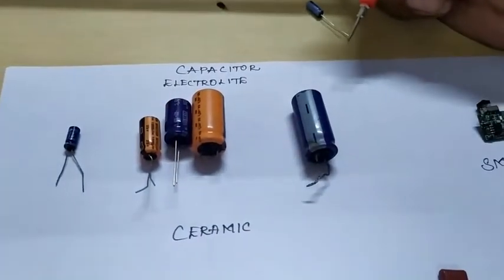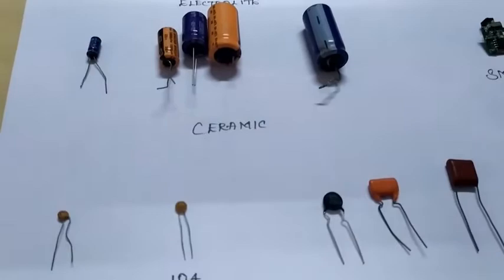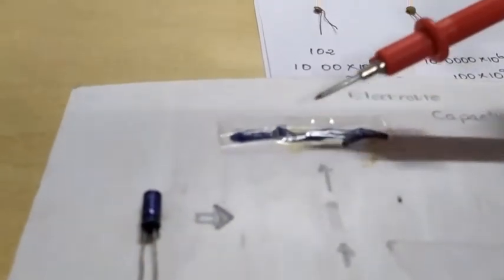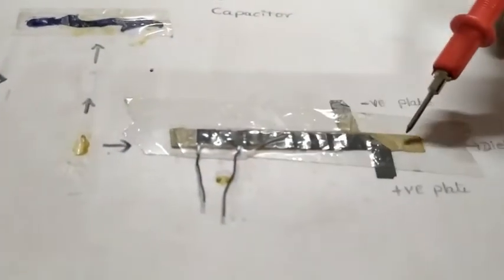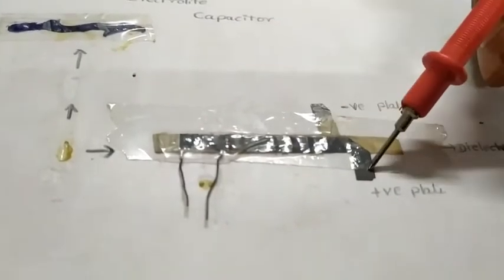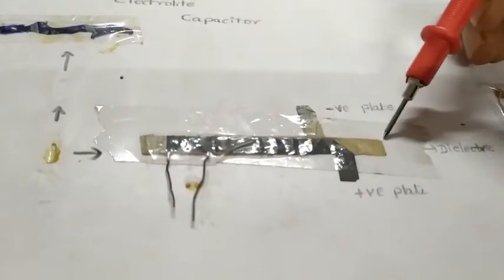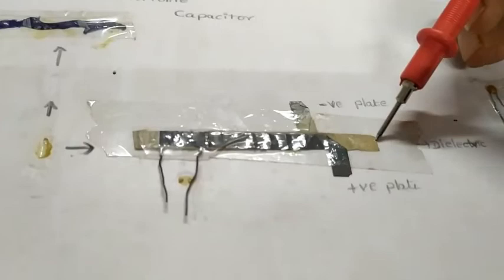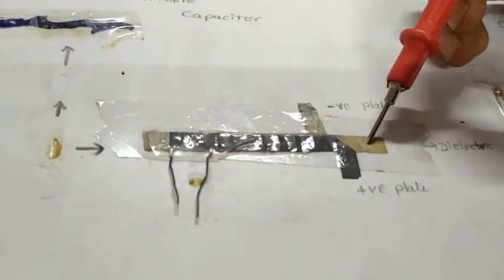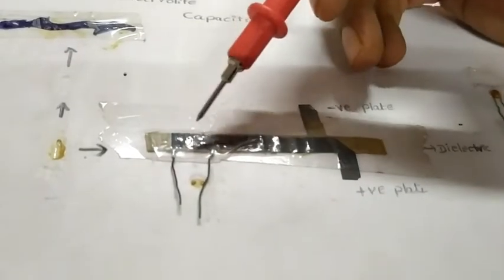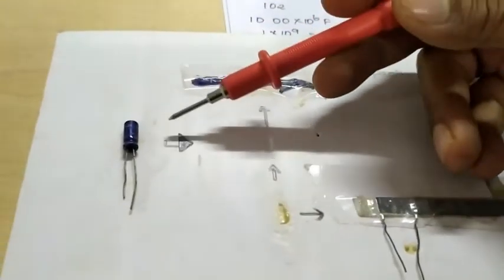When you dismantle this capacitor we have a parallel plate. Here is the parallel plate, this one is the positive, negative, and in between there is a dielectric. The film can be used as a paper, film can be used as a dielectric material. This can be rolled and can be inserted in this capacitor like this.